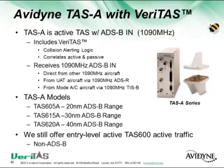Avidyne's active traffic systems are going to include Veritas, which is this TSAA logic we talked about. It'll receive ADS-B-In via 1090, get UAT targets via ADS-R from the ground, and also receive Mode AC targets via the ground-based TIS-B. We have three different models — the TAS-A series. We'll still offer our entry-level TAS-600, which is non-ADS-B, but it'll give you active traffic at a significantly lower cost.